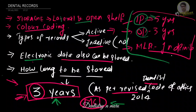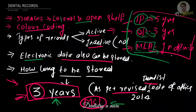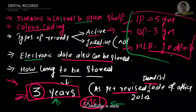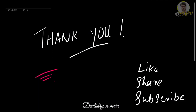Medico-legal records (MLR) must be stored for an indefinite period. So OP records can be cleared after three years, IP records after five years, but medical-legal records must be kept indefinitely. There are also two types of records: active records, for patients who are currently undergoing treatment and regularly coming to the clinic, and inactive records, for patients who have not returned to the clinic for at least the past 24 months.